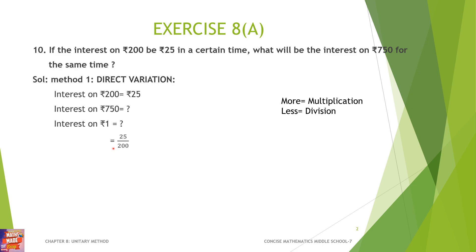I'm not going to divide this because if you divide it, you will get it in decimals, which makes it difficult. So, interest on 1 rupee will be 25 divided by 200. Interest on 750 will be more — surely more. More means multiplication. So, to this 1 rupee interest, I'm going to multiply with 750. Just do the cancellation and you will get 93 rupees 75 paise.